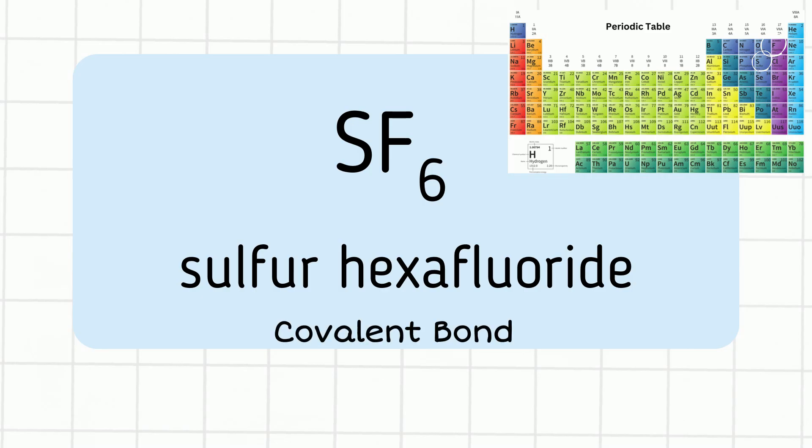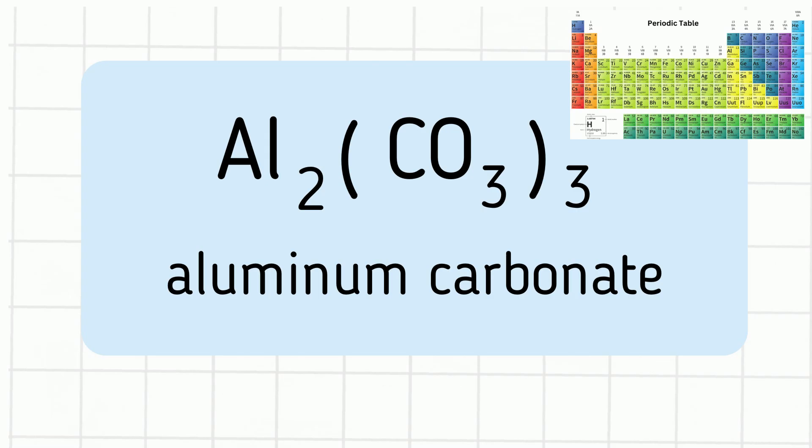And finally, we have aluminum carbonate. Aluminum is found in group 13, and it is a post-transition metal. And then the CO3 is a polyatomic ion. So it is going to be an ionic bond.